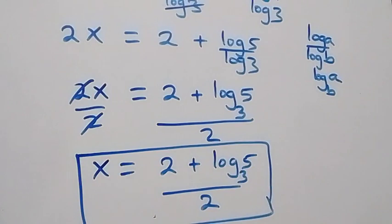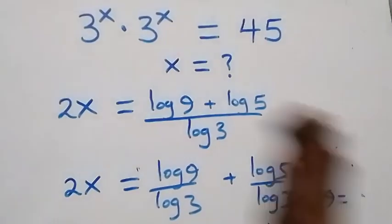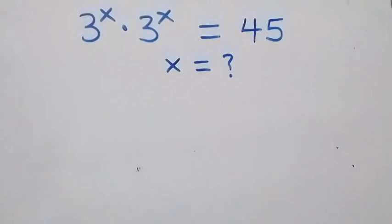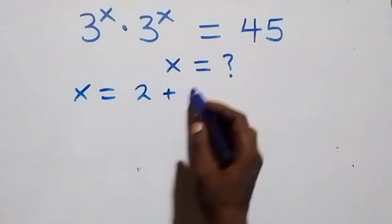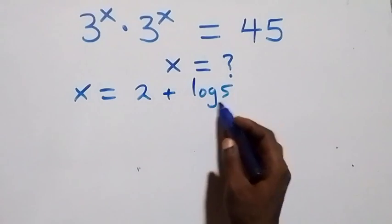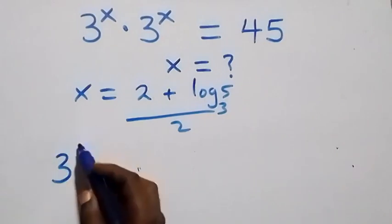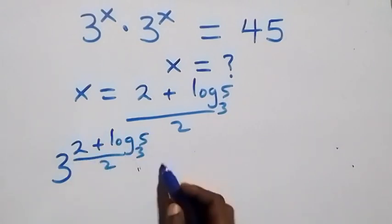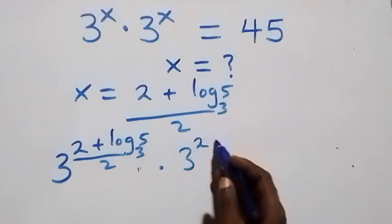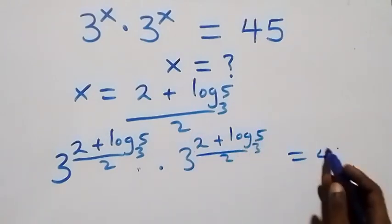As x equals to two plus log five base three, all over two. Now let's check if this satisfies the given problem. That is, we substitute the value of x, which is x equals to two plus log five base three, all over two. Then what we have becomes three raised to power two plus log five base three, all over two, times three raised to power two plus log five base three, all over two, equals to forty-five.